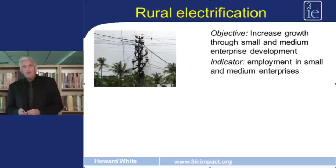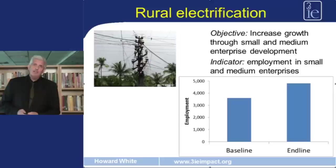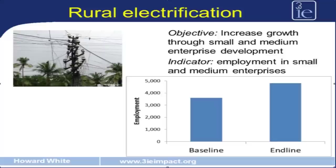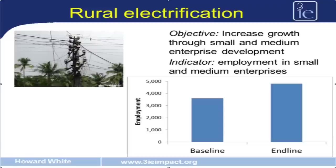What has happened to employment in project areas during the life of this project? This graph shows the increase of employment during the life of the project from baseline, before the project started, to end line, at the end of the project. Employment in small and medium enterprises has risen from 3,200 people at baseline to 4,800 people at end line — an increase of 1,600 new jobs created in project areas.